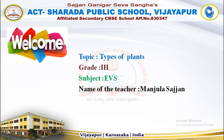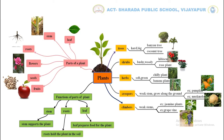Today we will continue with activity number three. You have to answer the given questions with the help of a mind map. So let's recall the mind map. Plants — the parts of a plant are leaf, stem, roots, flowers, seeds, and fruits.